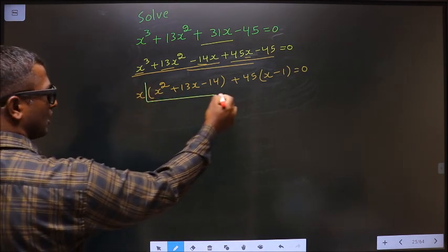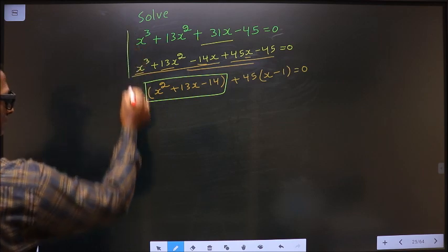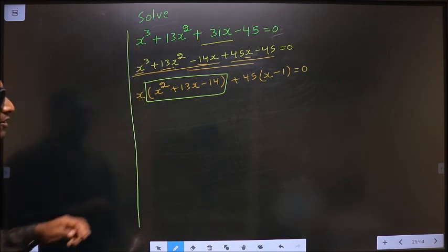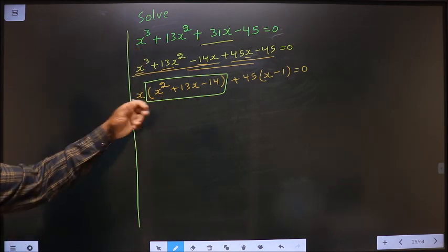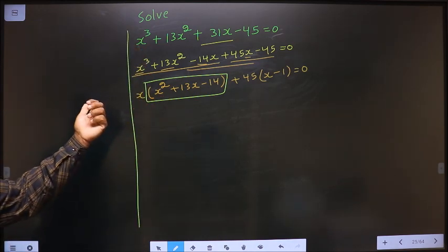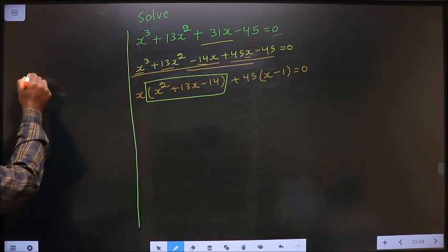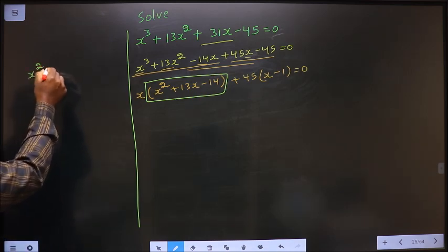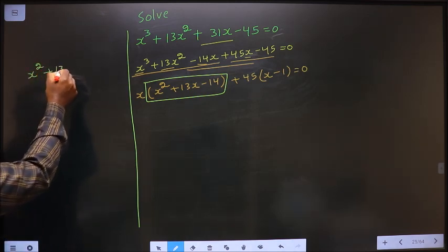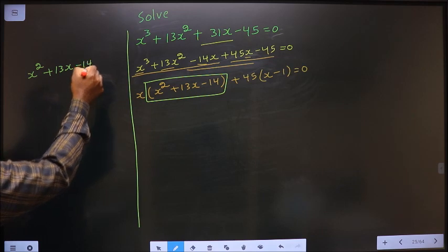This is a quadratic, so let us factorize this quadratic equation here. That is x square plus 13x minus 14.